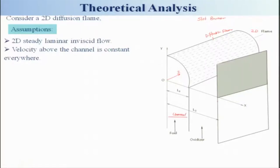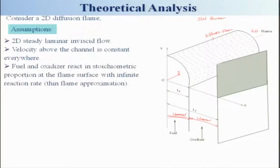The channel through which fuel is passing and another channel — the velocity above the channel — will be remaining roughly constant. We will be using the thin flame approximation, in which fuel and oxidizer react in stoichiometric proportion at the flame surface with an infinite reaction rate.